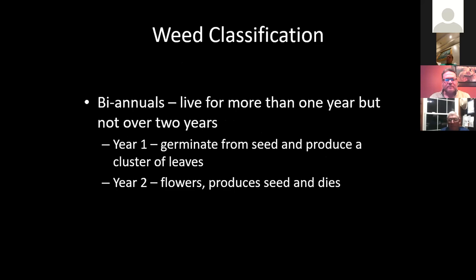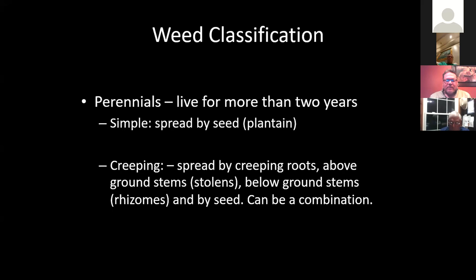Biannuals live for two years. Year one, they generate from a seed and produce a cluster of leaves and a root system. The second year they produce seed and then that mother plant dies, but the seeds germinate and start that life cycle over again. Perennials are the big challenge because mowing won't get rid of them. We have to use some type of herbicide management. Plantain is a prime example. Johnson grass, if you think it's a weed, is another example. You've got creeping roots, above-ground stems which are stolons, and below-ground stems which are rhizomes.